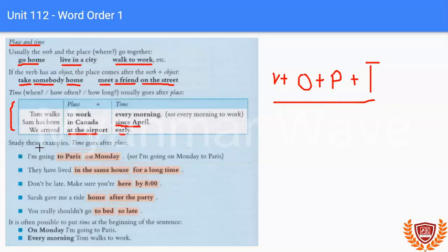See these examples. Time goes after place. I'm going to Paris on Monday, not I'm going on Monday to Paris. They have lived in the same house for a long time, not for a long time in the same house. So always come place before time.